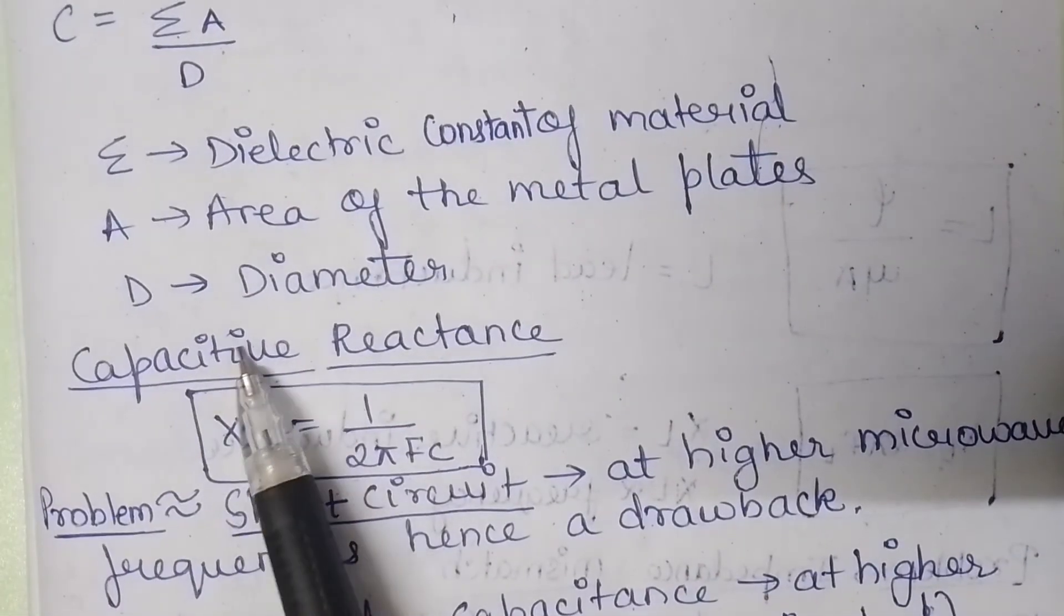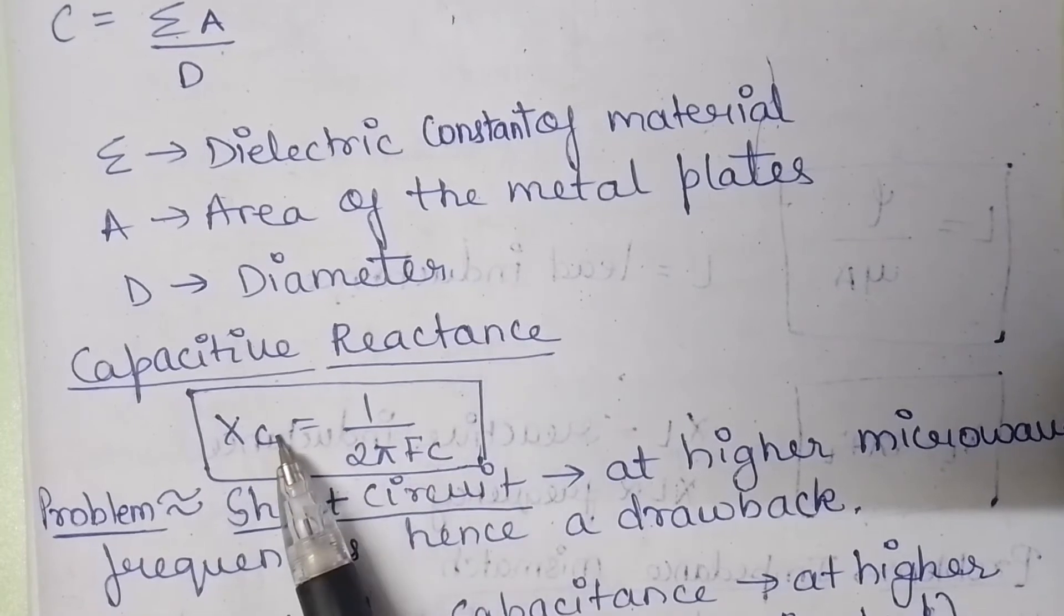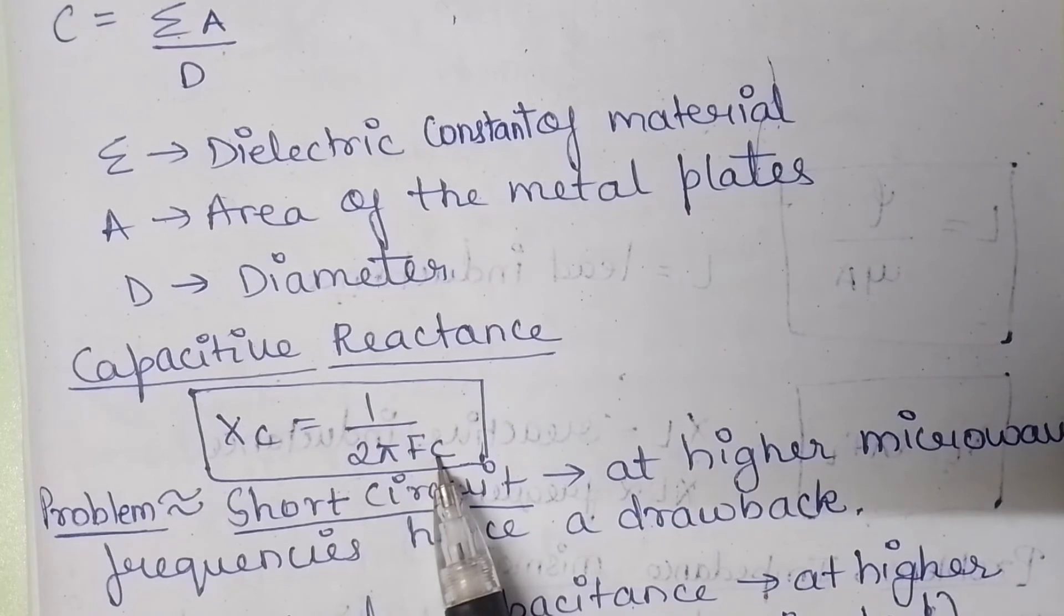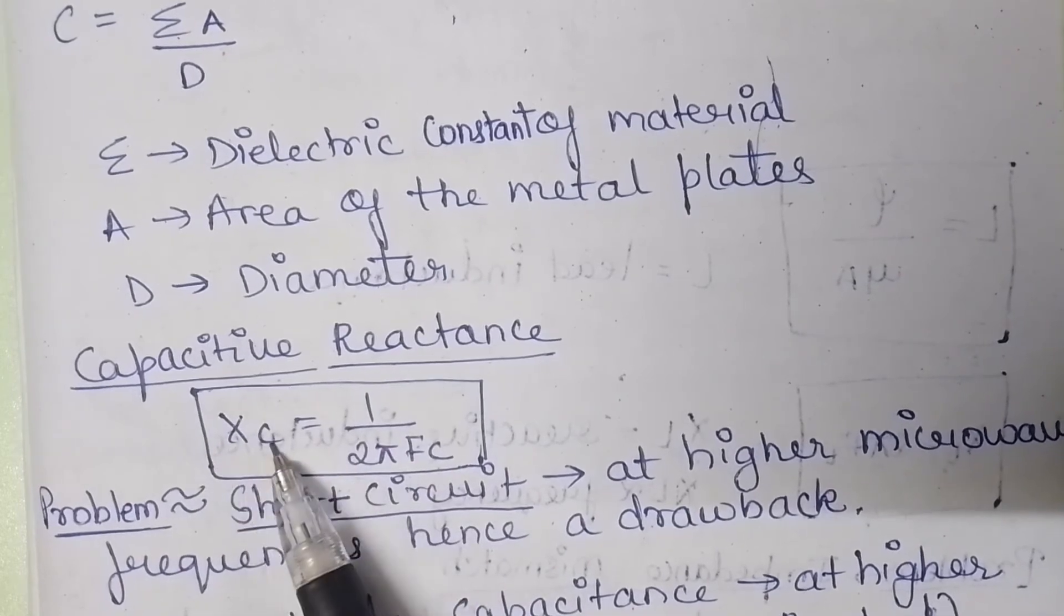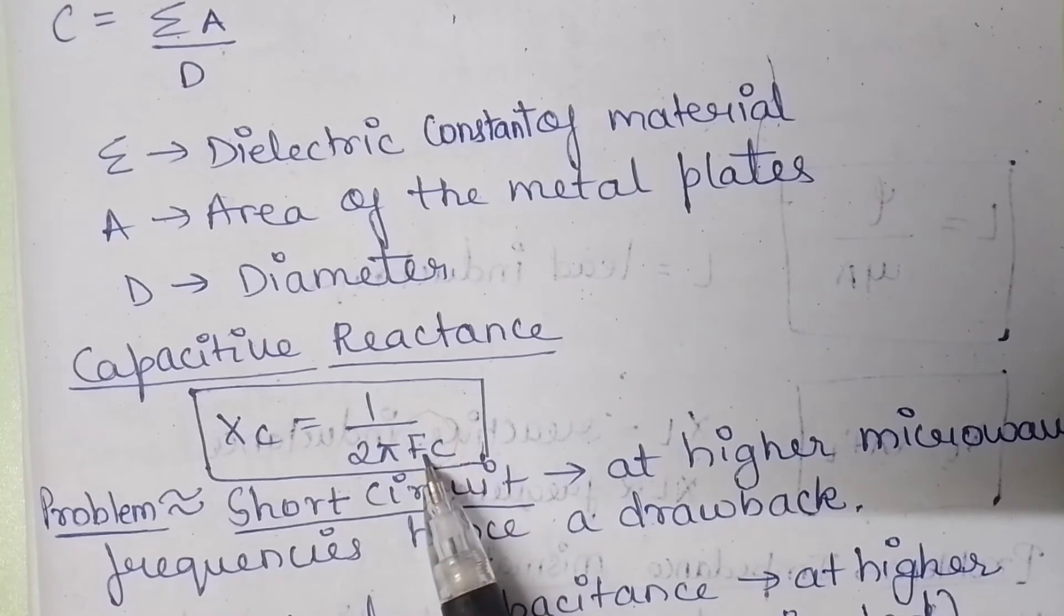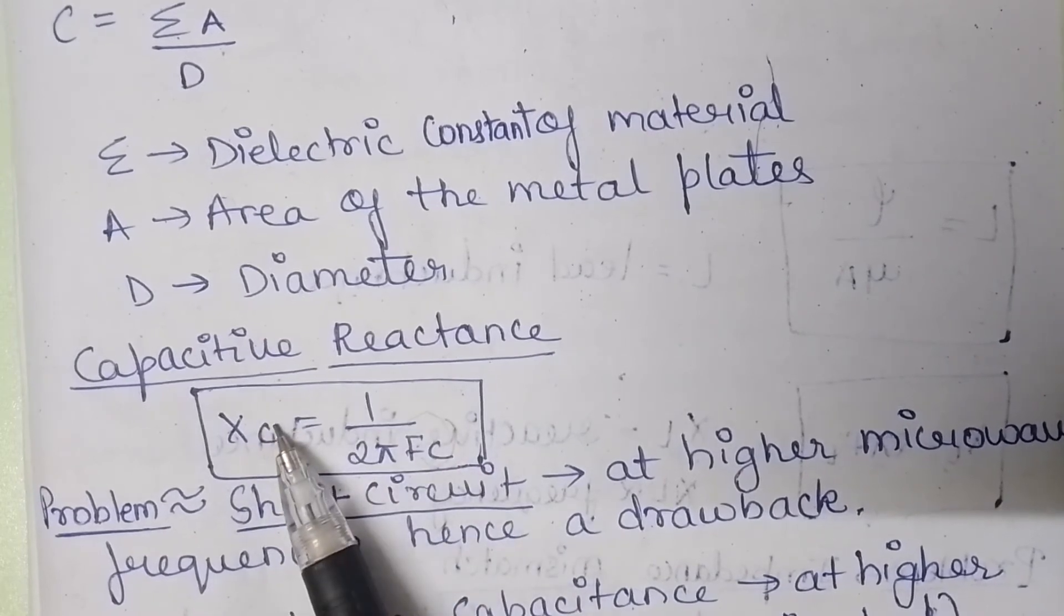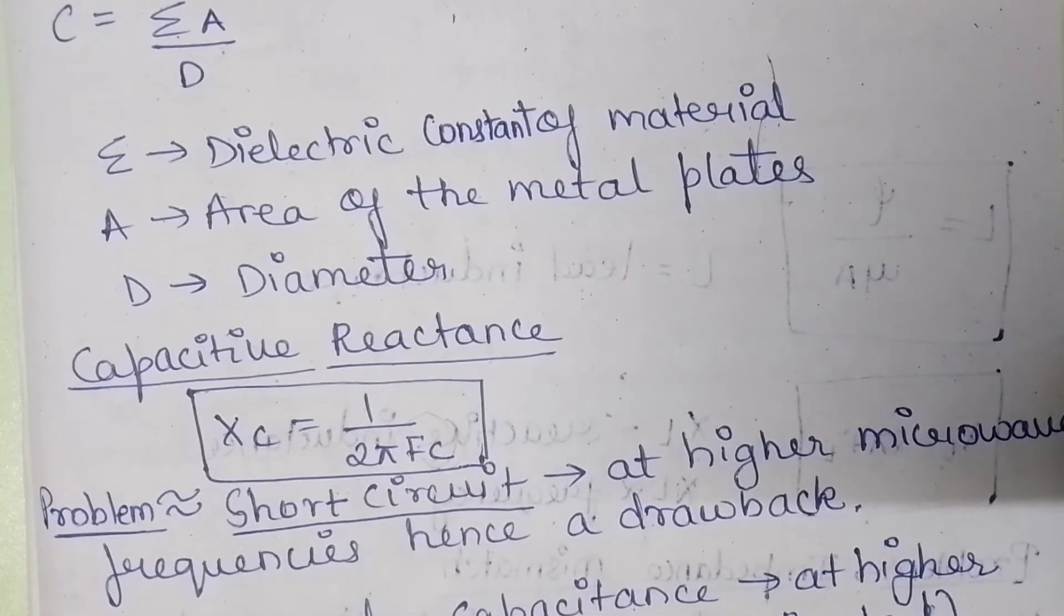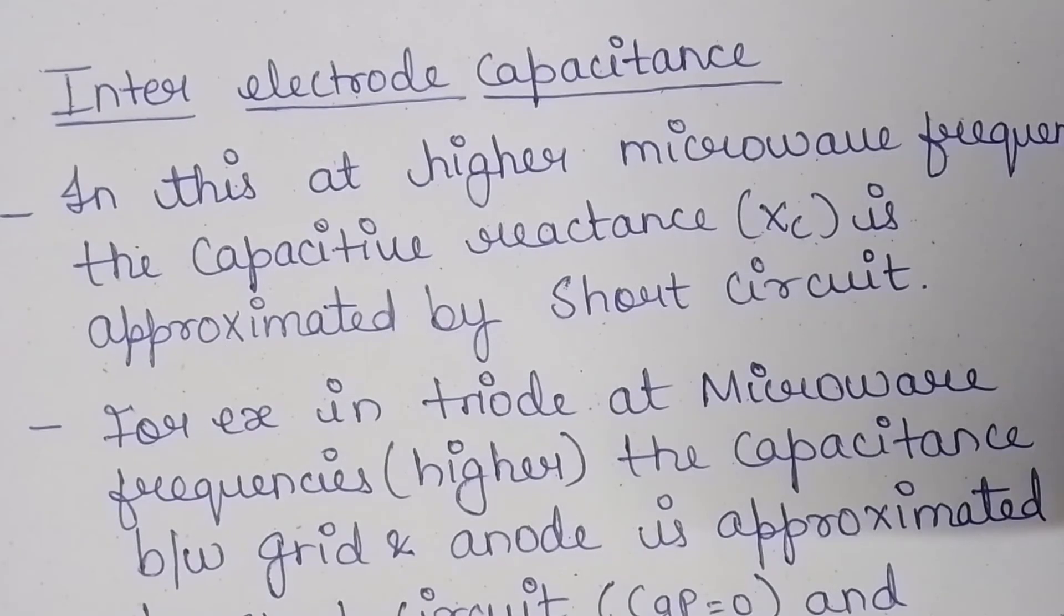The capacitive reactance can be calculated by Xc equals 1 upon 2 pi Fc, where Xc represents the capacitive reactance and Fc is the frequency. You can observe that capacitive reactance is inversely proportional to the frequency. Now let's learn about what is exactly the problem.